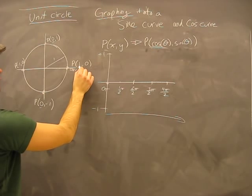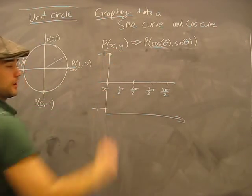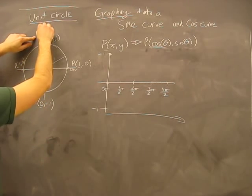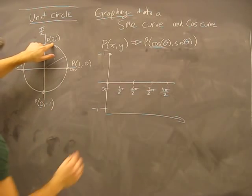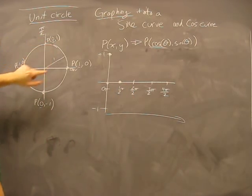Our X axis values are here. At π/2, cosine is 0. At π, cosine is -1.